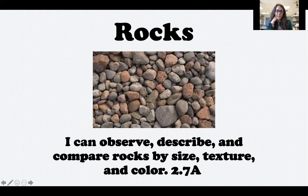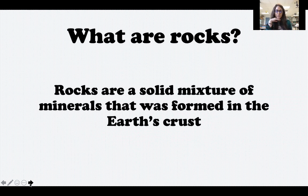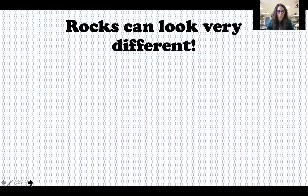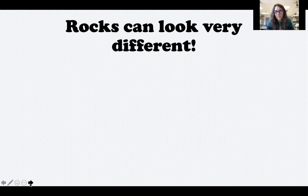Your target says: I can observe, describe, and compare rocks by size, texture, and color. Rocks are a solid mixture of minerals that was formed in the earth's crust. The earth is divided up into different layers, and the outer layer where we are is called the crust, and the crust is made up of rocks.